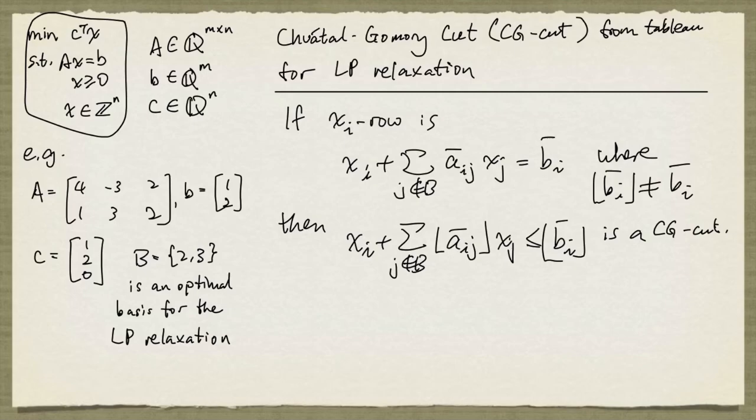This inequality is satisfied by all solutions to the original problem, but not by the basic feasible solution determined by the current basis. So it can be added to the original problem. And in order to keep the problem in the same form, what we can do is introduce a slack variable to convert the inequality to an equality.